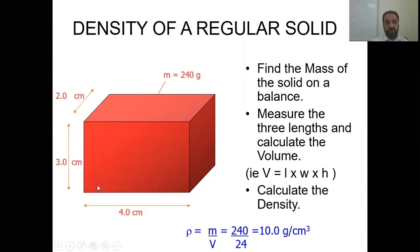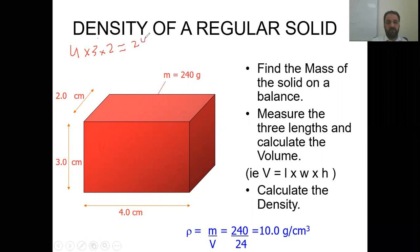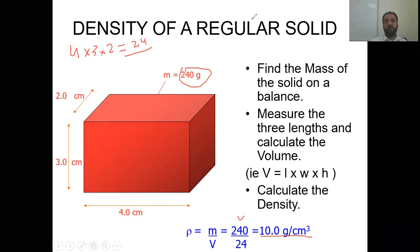Multiplying 4 times 3 times 2 gives 24, so volume is 24 centimeter cube. Mass is 240 grams. Dividing 240 by 24 gives a density of 10 grams per centimeter cube. This is the density of this material.